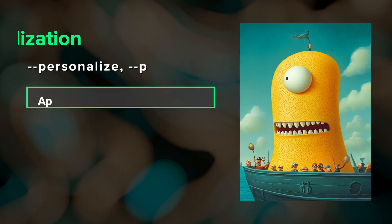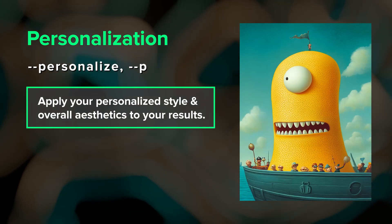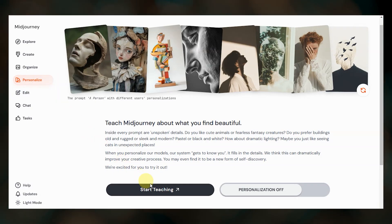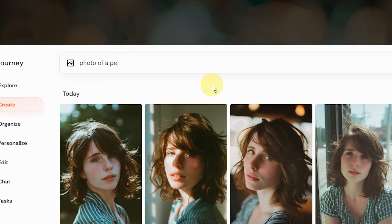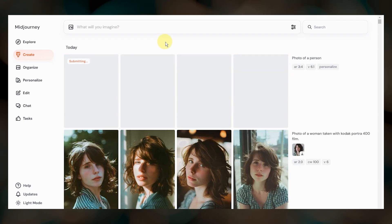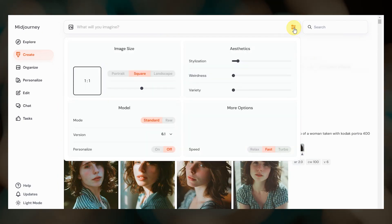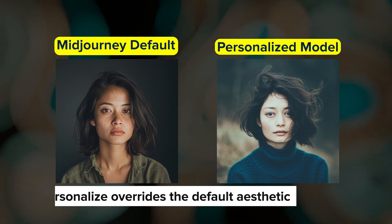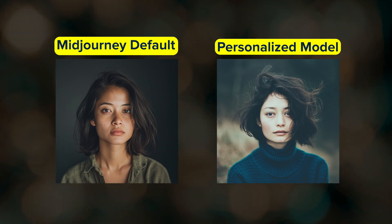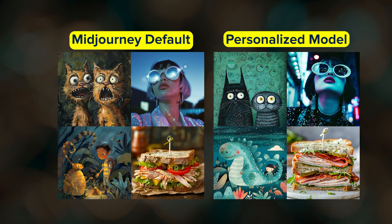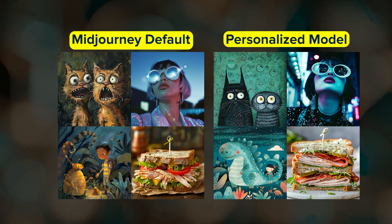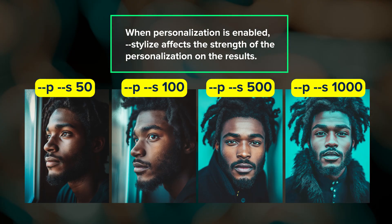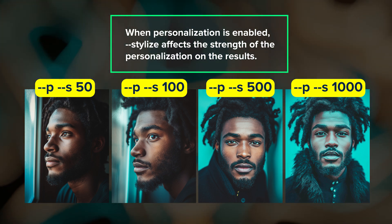Personalization is your secret weapon for getting images that match your preferred visual aesthetics — it basically lets you create your own custom Midjourney model. To use it, you first need to teach Midjourney about your style, then include --personalize or --p in your prompt, or set it as your default in the settings menu. When enabled, your personalized model overrides the default Midjourney aesthetic. The stylize parameter, when personalization is enabled, acts on your personalized model instead.